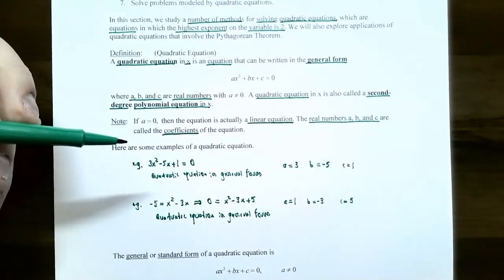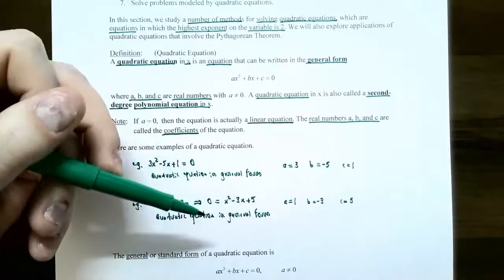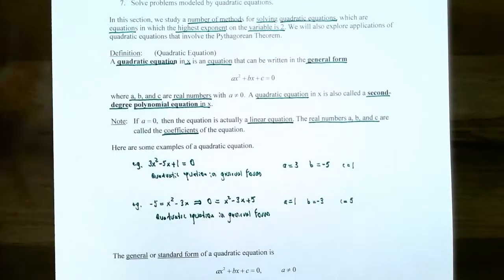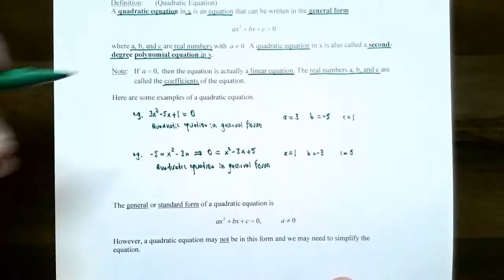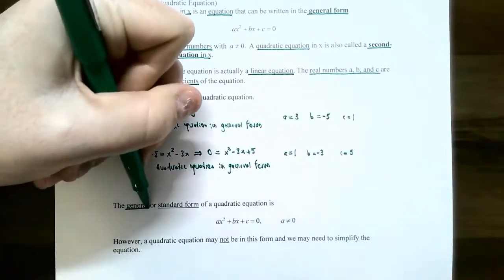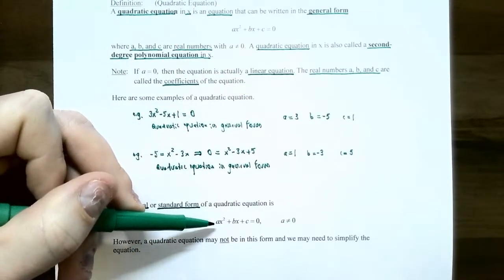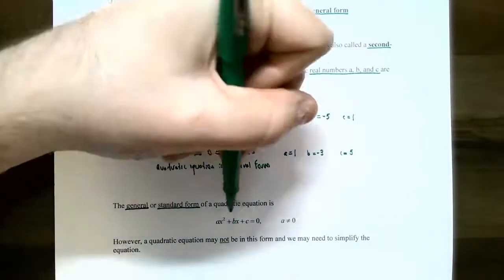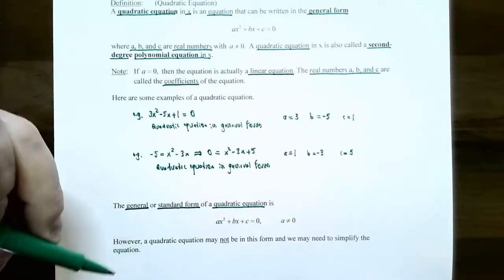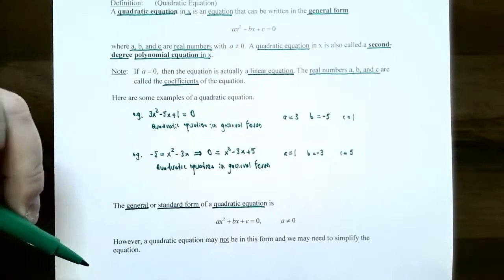Be very careful on how you label a, b, and c. If it's not written in ax squared plus bx plus c order, you may want to rewrite it so the x squared term is first, the x term is second, and the constant term is last. General form — sometimes called standard form — will always look like ax squared plus bx plus c equals zero, where a cannot be zero. Sometimes you may have to simplify an equation to confirm it's actually a quadratic equation in general form.